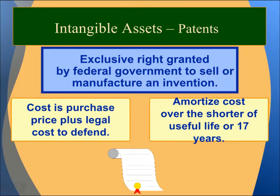What are Patents? A patent is an exclusive right granted by the Federal Government to sell or manufacture an invention. The cost includes purchase price plus legal costs to defend, and is amortized over the shorter of useful life or 17 years.